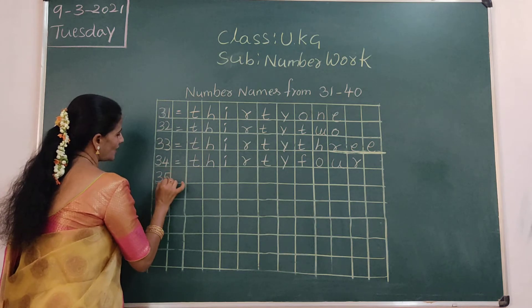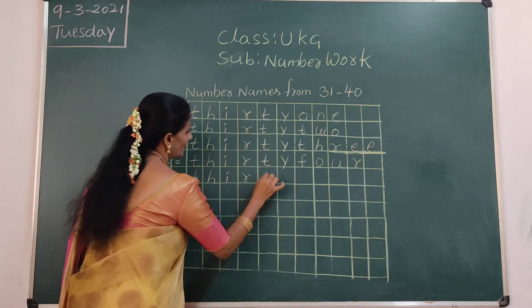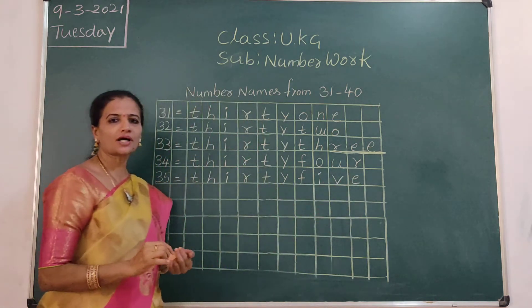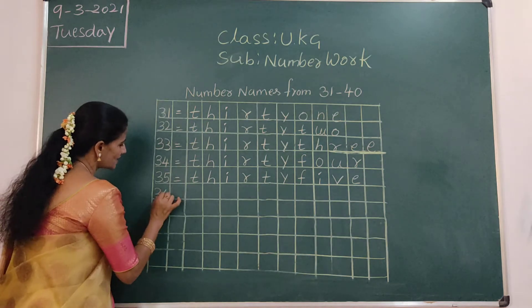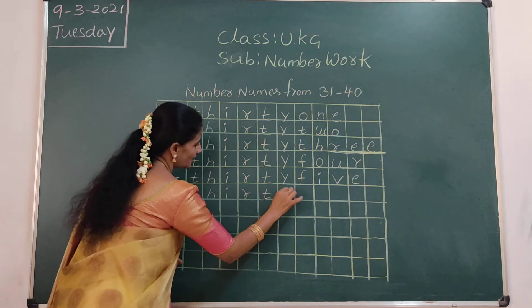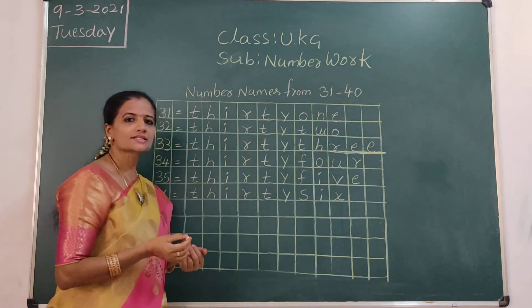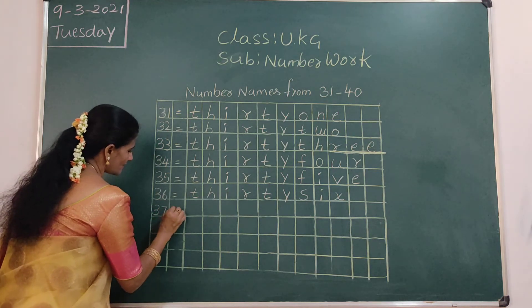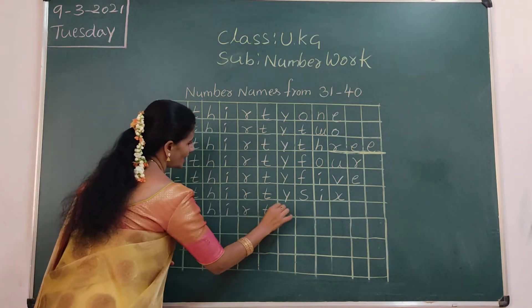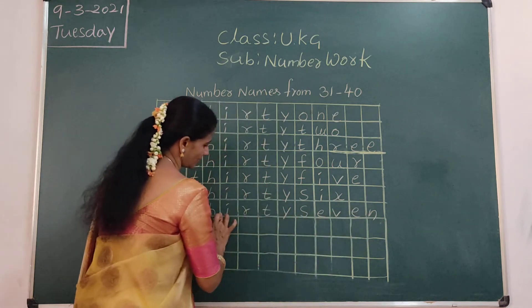35 — THIRTY-FIVE. T-H, I-R, T-Y, F-I-V-E. 35. Now 36 — THIRTY-SIX. T-H, I-R, T-Y, S-I-X. 36. Now 37 — THIRTY-SEVEN. T-H, I-R, T-Y, S-E-V-E-N. 37.